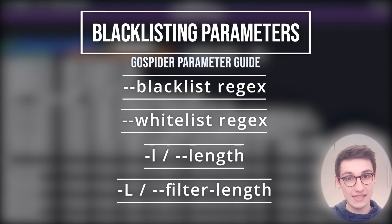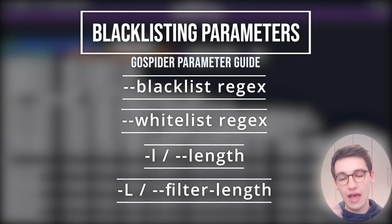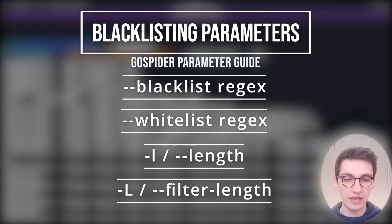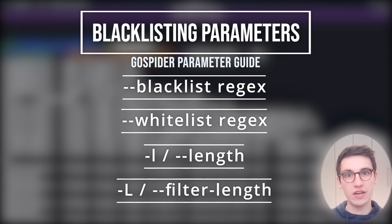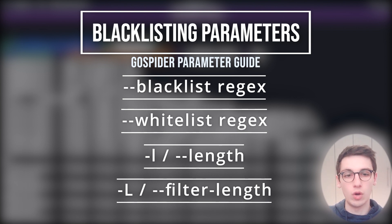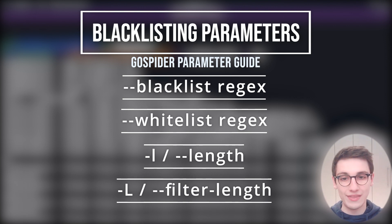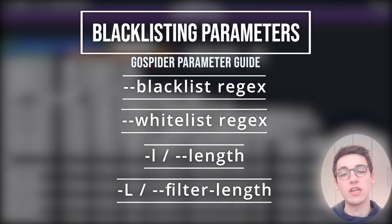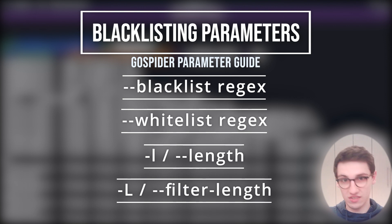We can also whitelist things if we only want specific results. You can view the length of every file with "-l" or "--length", and then filter out specific things with "--filter-length". This is extremely useful if a website has a custom 404 page that returns a 200 — you can remove those from results with filter-length. You can also filter out certain file extensions you don't want, like PNGs and other things that aren't really interesting.